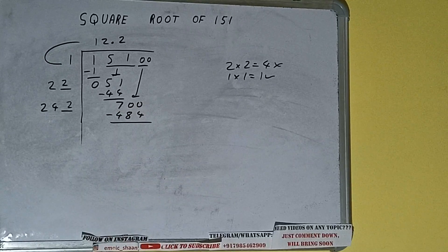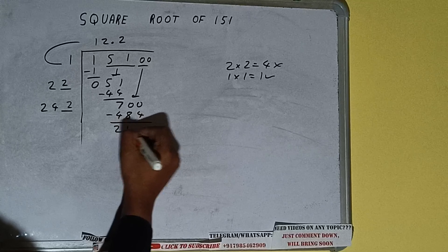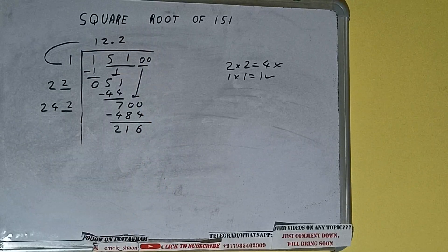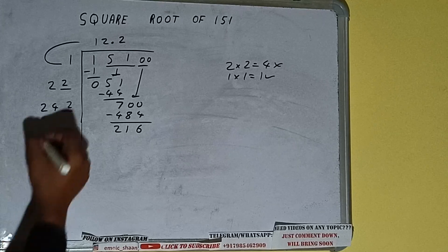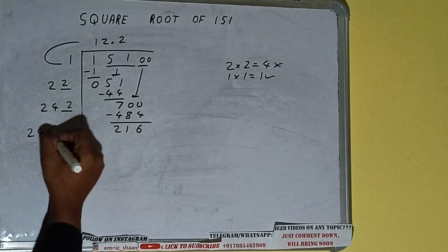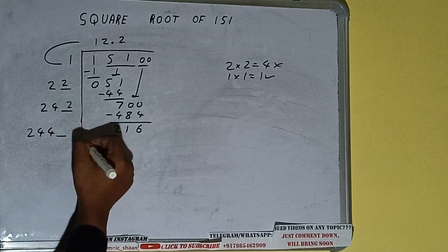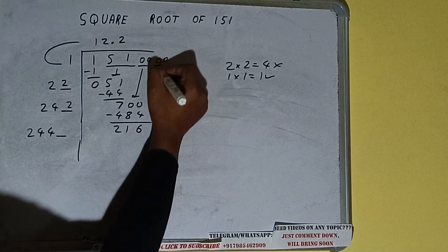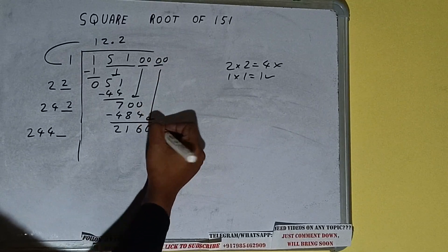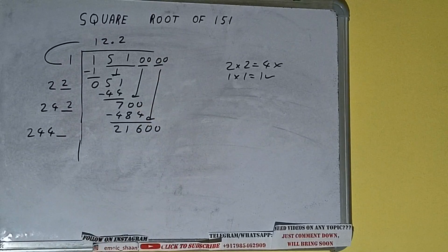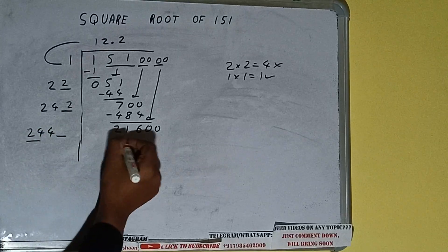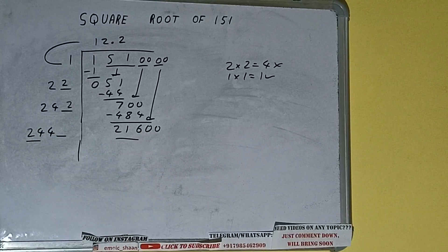242 into 2 will be 484. Subtract it and we'll be left with 216. 242 into 2 we did, so add both: 242 plus 2 will be 244, and one digit extra. This number we need to make it bigger, so bring the next pair of zeros down and it will be 21600.